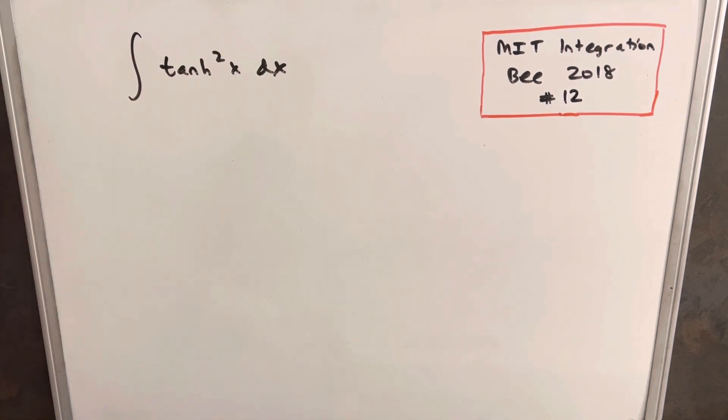So the way this goes, this is very similar to the integral of just tan squared. Notice, I just want to emphasize we have hyperbolic tangent squared, but it's not much harder.